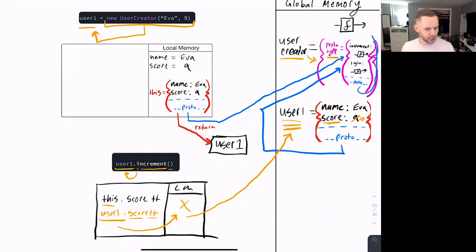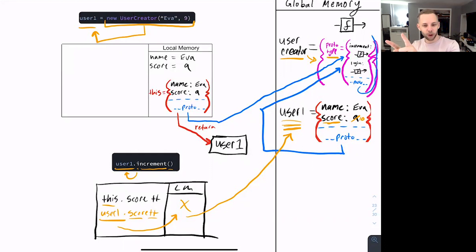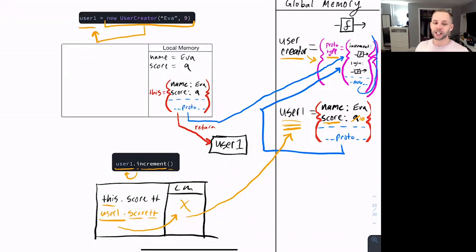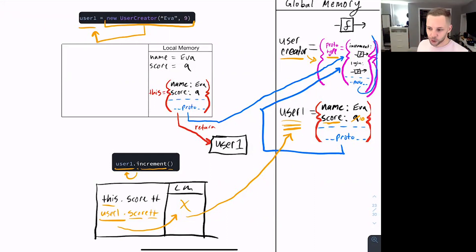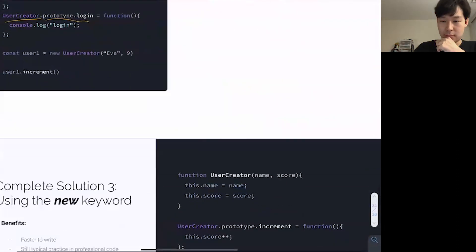If you understand those simple mechanics, any 'what if' situation — what if your dunder proto points to a function instead of an object, what if it's set up differently — you can whiteboard out and see exactly how it works. I don't see any other virtual hands up right now, so I'll assume we're perfectly clear. Let's move on to our last piece.